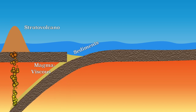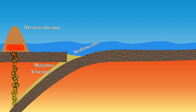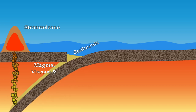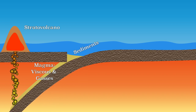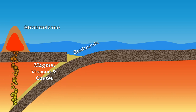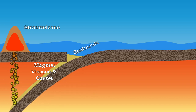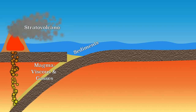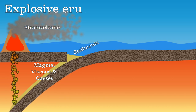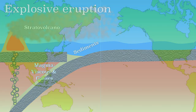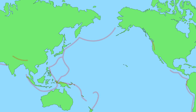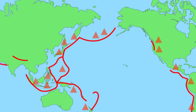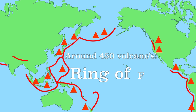The magma can't easily escape from the volcano. Because there are also many gases in the magma, the pressure is increased. At some point there will be a violent eruption due to the increased pressure — this is an explosive eruption. There is a lot of subduction around the Pacific Ocean, so there are also many stratovolcanoes. This area is therefore called the Ring of Fire.